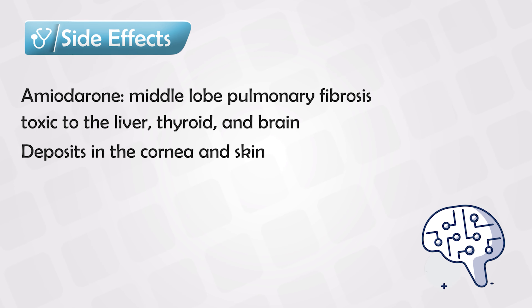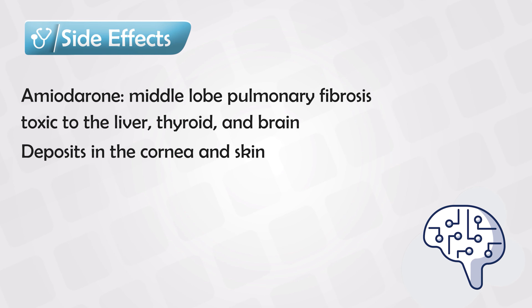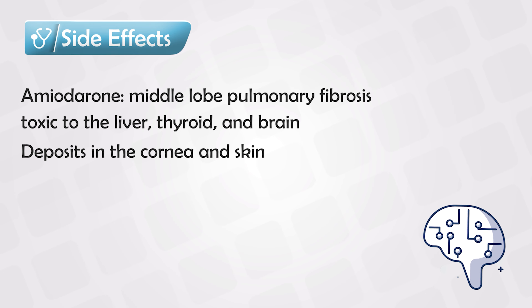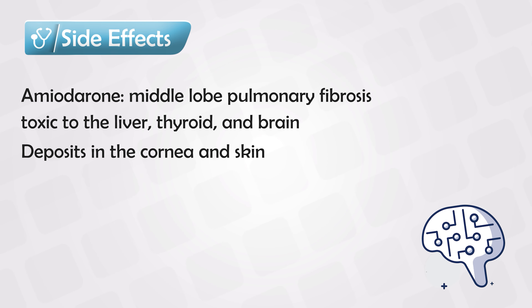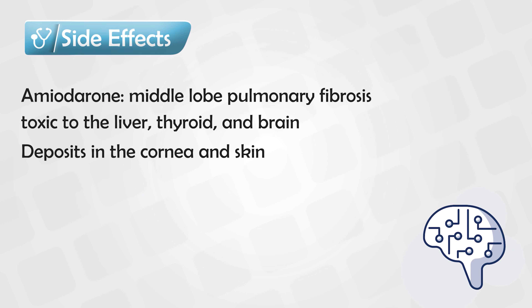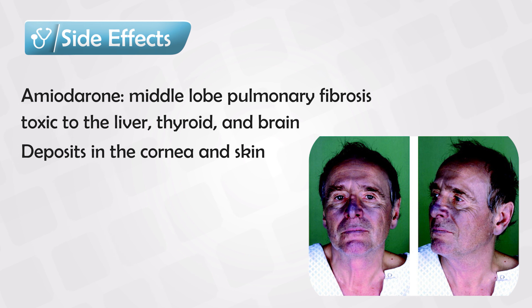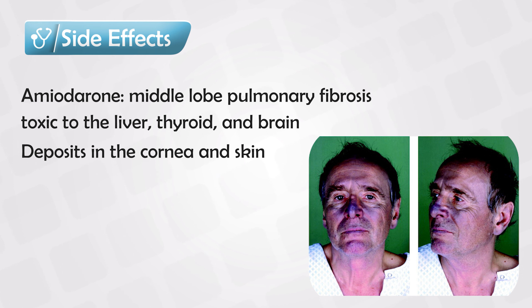Amiodarone also deposits in the cornea and this can cause some scarring or blindness, which is irreversible. It can also deposit underneath the skin, causing photodermatitis and bluish skin — this is known as blue skin syndrome. It's also neurotoxic and cardiotoxic.